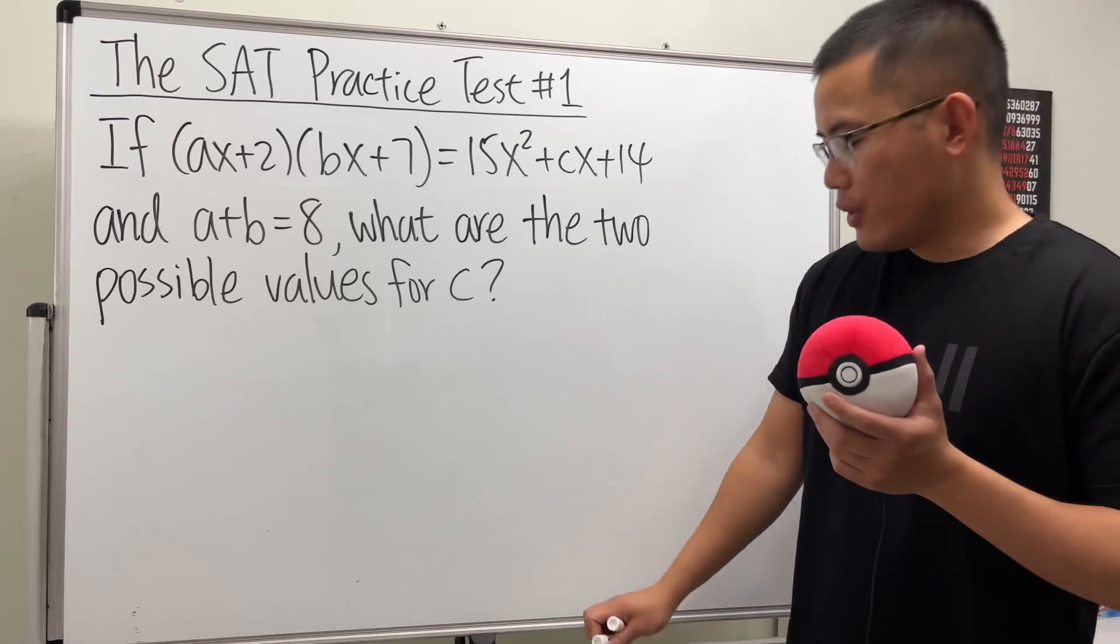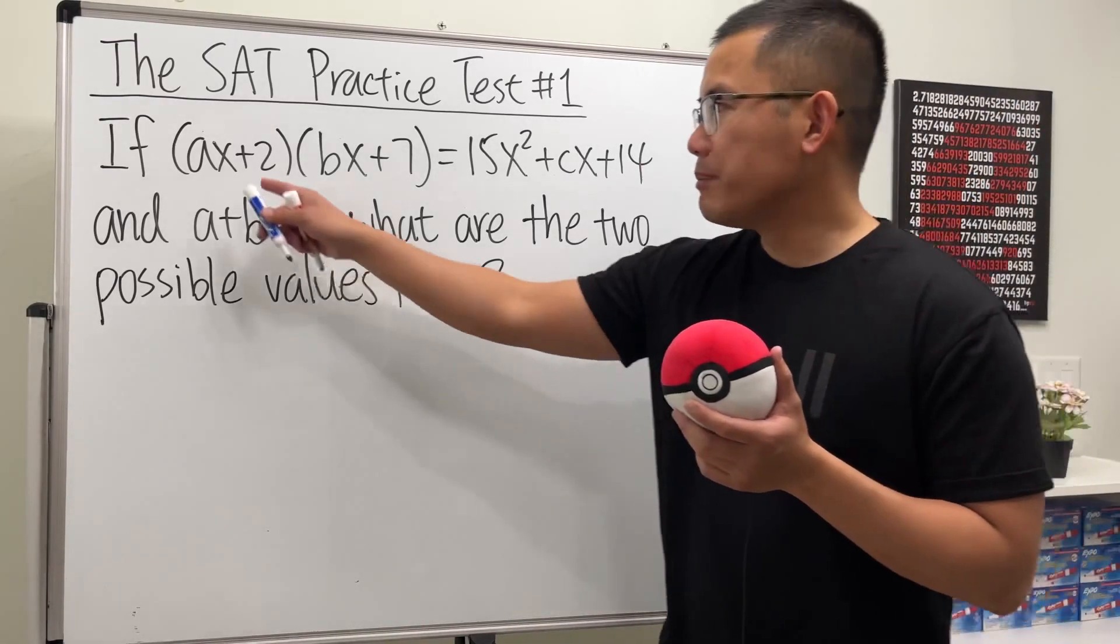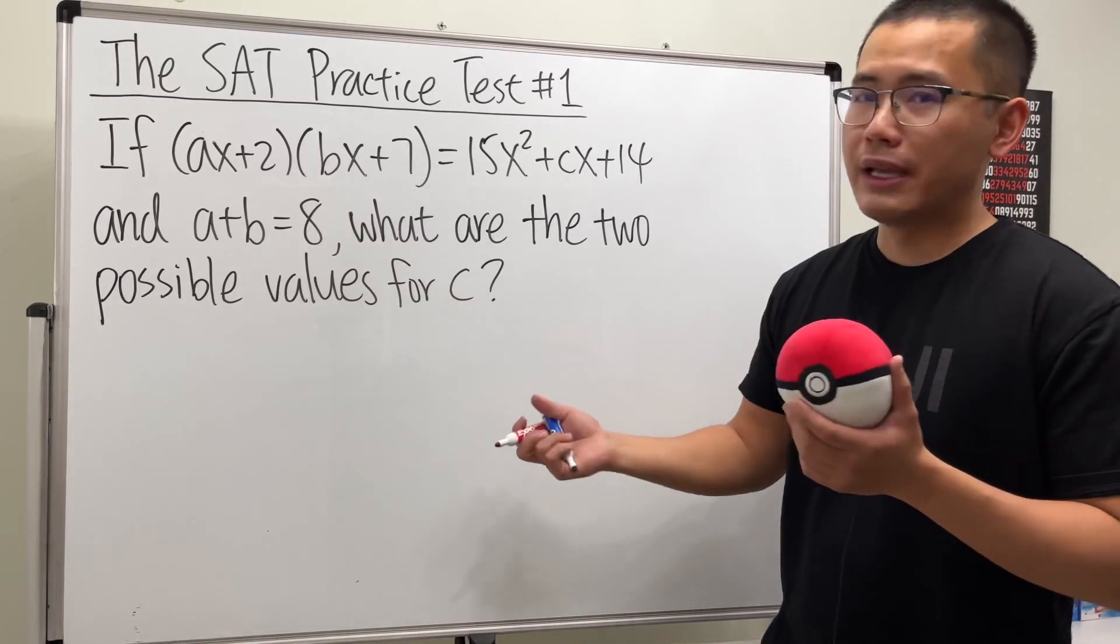So what should we do? Well, we see that we have a binomial times a binomial, so naturally we just want to multiply them out.